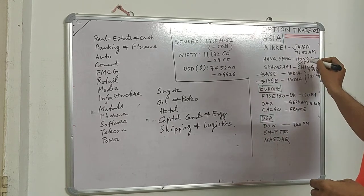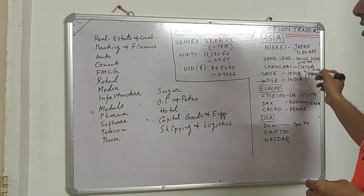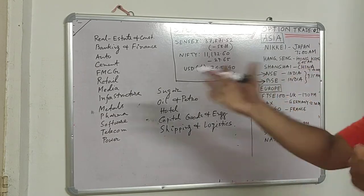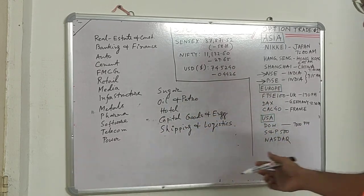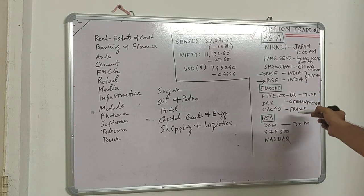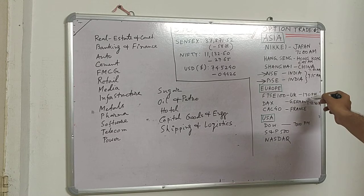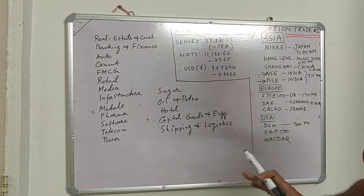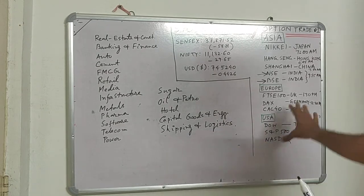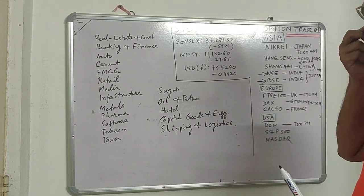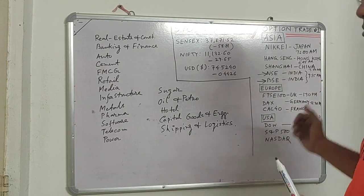Nikkei starts at 7 AM in the morning, and Hang Seng around 6:45 AM. Shanghai is around 7 AM. They are ahead of us, so they open in the morning. The European market opens at 12:30 PM, Germany and the UK at 1:30 PM, and by around 2:30 PM all European markets are open. The USA starts at around 7 PM.